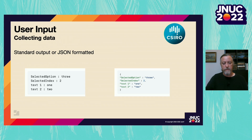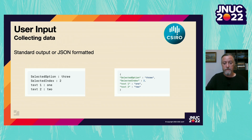The data collected from these options can be presented back to your calling script in one of two ways. The standard output will simply echo the name of the field and the value that was entered for easier processing, or for scripting languages that support it, you can opt to output in JSON format.